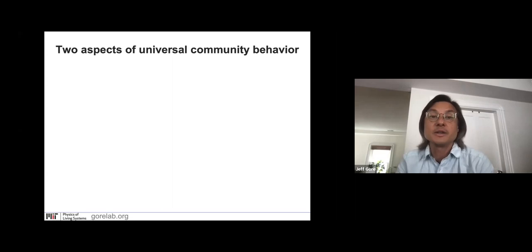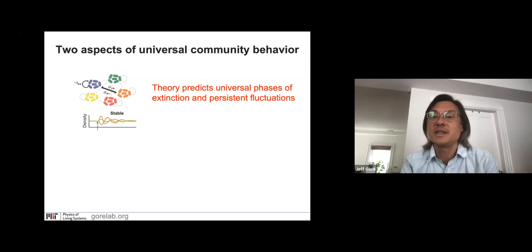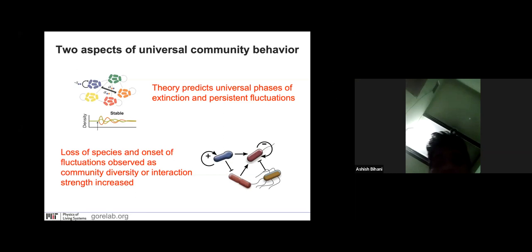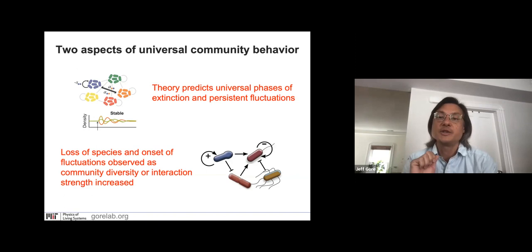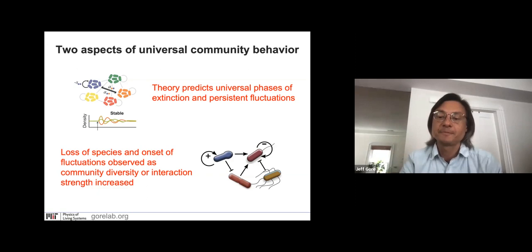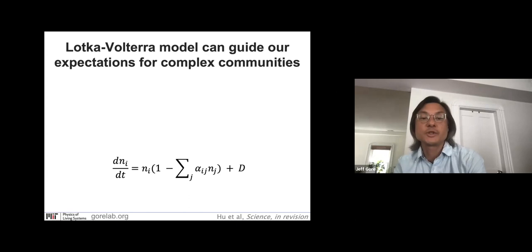I'll tell you about two different aspects of the universal community dynamics. First, I'll tell you about how simple theory — the generalized Lotka-Volterra model — does predict that there are universal phases, and in particular phases of species extinction and fluctuations versus stability. Then I'll tell you about our experiments that have recapitulated these key predictions from the models. What we observe is a loss of species — species extinction — followed by the onset of fluctuations, as you either increase the diversity in the community or increase the mean interaction strength between the species.